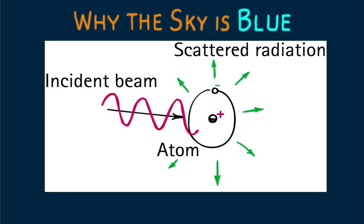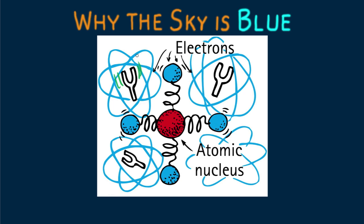A similar process occurs with the scattering of light from atoms and molecules in the atmosphere. These particles emit light most strongly in the ultraviolet region, so we can say that they have natural frequencies that are greater than the frequencies of visible light. This means that blue light will be closer in frequency than red to the natural frequencies of the atoms and molecules, and will be scattered more strongly than red light.